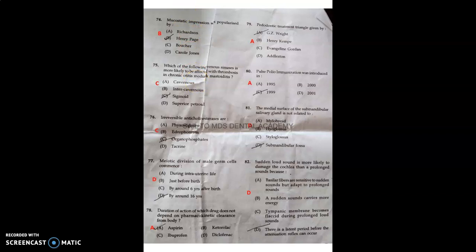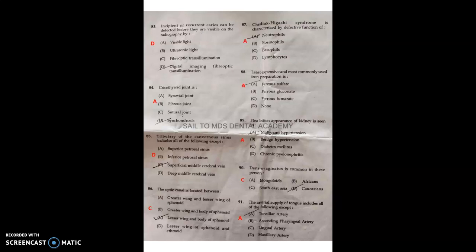The venous sinus most likely to be affected with thrombosis in chronic otitis media and mastoiditis is sigmoid sinus. Irreversible anticholinesterases are organophosphates. Meiotic division of male germ cell commences around 16 years. The drug whose duration of action does not depend on pharmacokinetic clearance from the body is aspirin. Pedodontic treatment triangle was given by G.Z. Wright. Pulse polio immunization was introduced in 1995. The medial surface of the submandibular salivary gland is not related to the submandibular fossa. Sudden loud sound is more likely to cause damage than prolonged sound because there is a latent period before attenuation reflex can occur. Incipient or recurrent caries can be detected before they are visible on radiograph by digital imaging fiber-optic transillumination. Cricothyroid joint is a type of synovial joint. Tributaries of the cavernous sinus include all except deep middle cerebral vein. The optic canal is located between lesser wing and body of sphenoid. Chediak-Higashi syndrome is characterized by defective function of neutrophils. Least expensive and most commonly used iron preparation is ferrous sulfate. Flea-bitten appearance of kidney is seen in malignant hypertension.